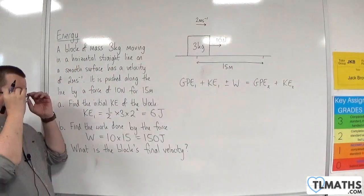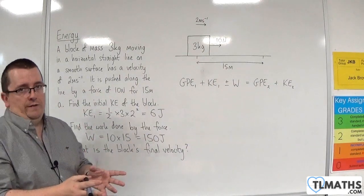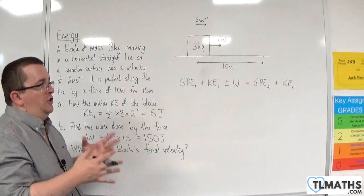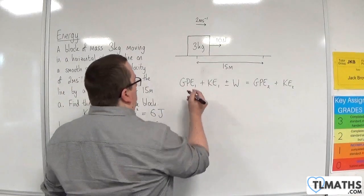Now, in the case that we're considering, the block starts at ground level and ends at ground level. So we're just going to take GPE to be zero. The height is zero. So that is zero.